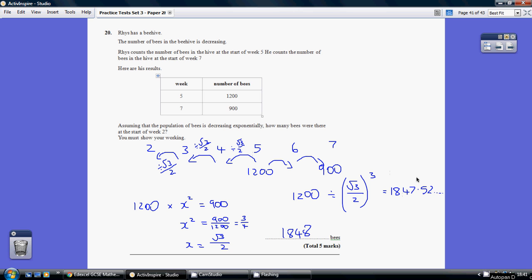Clearly you can't get a part of a bee, so round this up or down. Rounding up made sense to me, but 1,847 would have been fine. So 1,848 bees.